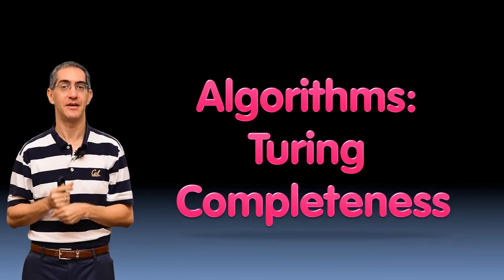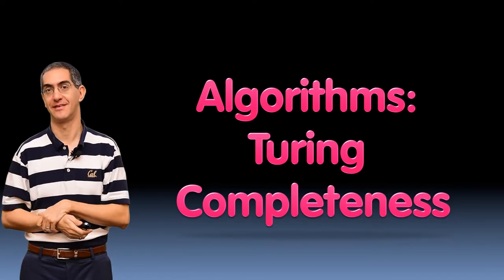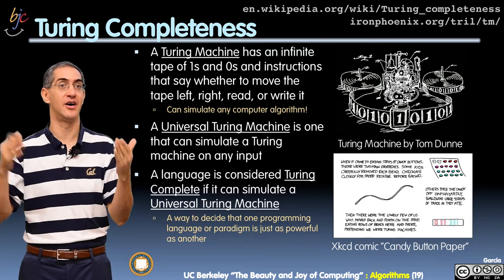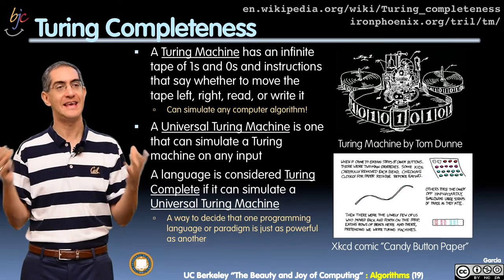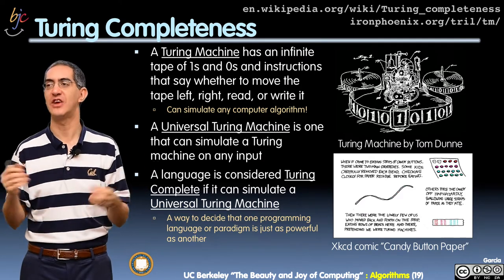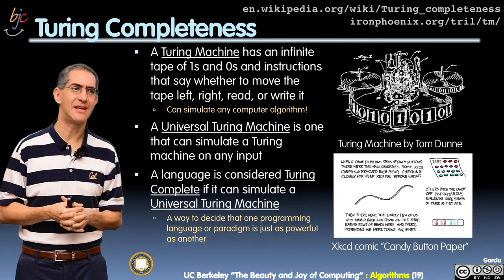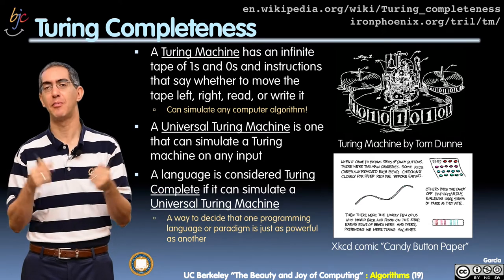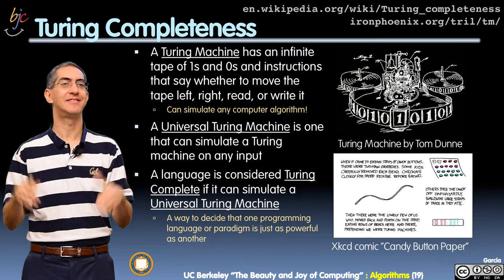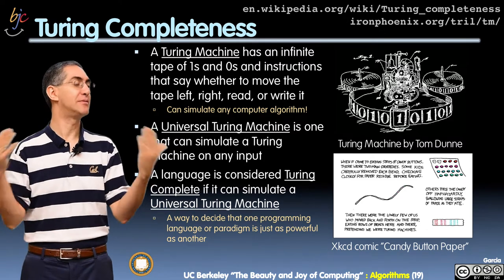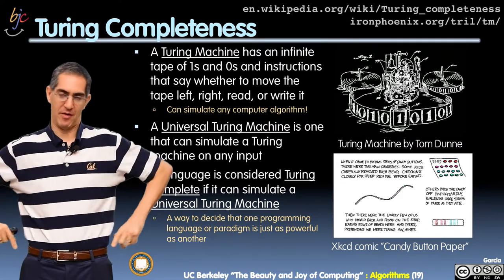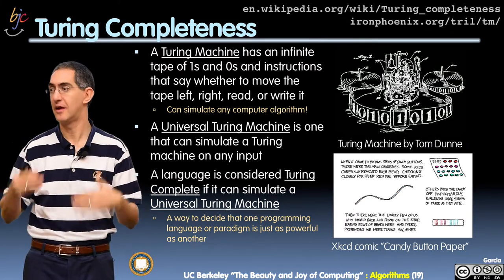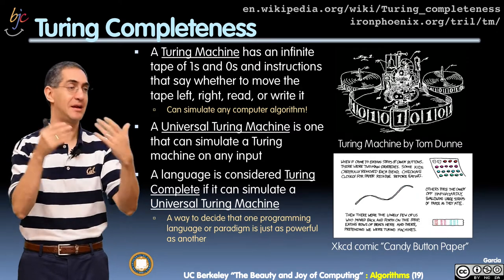Welcome back, folks. We're talking about algorithms and Turing completeness. Alan Turing was one of the most important computer scientists in the history of computer science. He had an idea for a particular machine. Back in his day, they were talking about what things are computable — what can be computed and what can't. He was trying to come up with the simplest machine that has just as much power as any machine. He didn't call it the Turing machine; he just described a machine, and only later did other mathematicians and computer scientists realize it was a powerful notion, and they named it after him.